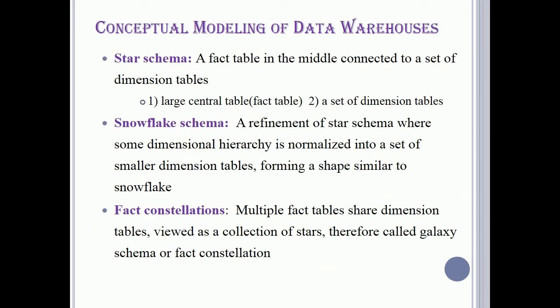Conceptual modeling of data warehouses: Star schema — a fact table in the middle connected to a set of dimension tables, with a large central fact table. Snowflake schema — a refinement of the star schema where some dimensional hierarchy is normalized into a set of smaller dimension tables, forming a shape similar to a snowflake. Fact constellations — multiple fact tables share dimension tables, viewed as a collection of stars, therefore also called galaxy schema or fact constellation.